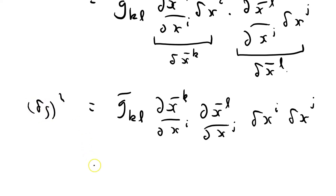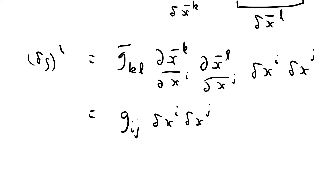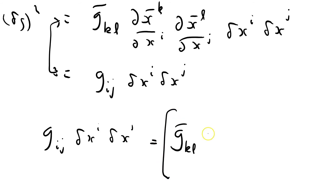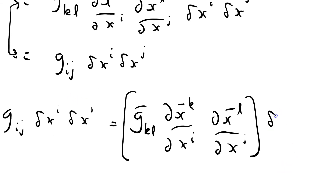And that's ds². In the unbarred coordinate system we had Gij δxⁱ δxʲ summed over i and j. So these two expressions are the same thing — just the distance element squared represented in two different coordinate systems with different metric tensors. So we have: Gij δxⁱ δxʲ equals Ḡkl (∂x̄ᵏ/∂xⁱ)(∂x̄ˡ/∂xʲ) δxⁱ δxʲ.